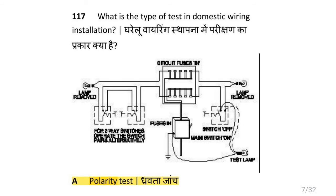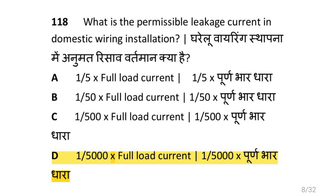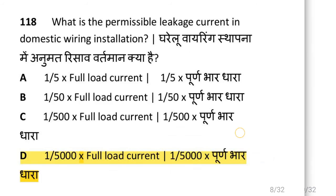What is the type of test in domestic wiring installation? That is polarity test. What is the permissible leakage current in domestic wiring installation? That is 1 by 5000 multiplied by full load current.